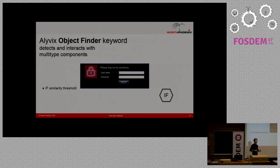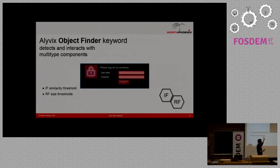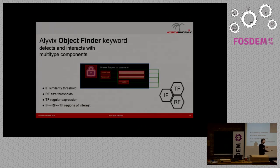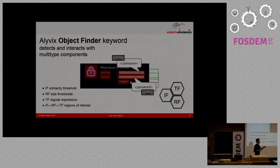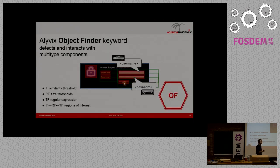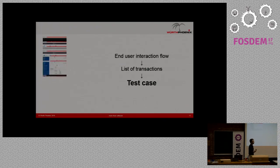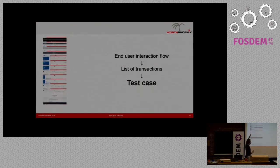But it's not the end of the story. We have these three basic finders, but we can combine them into a complex abstract object. You can put an image finder, a rectangular finder, and a text finder together and link them with the so-called region of interest, creating the object finder, which handles the interaction of the basic elements.